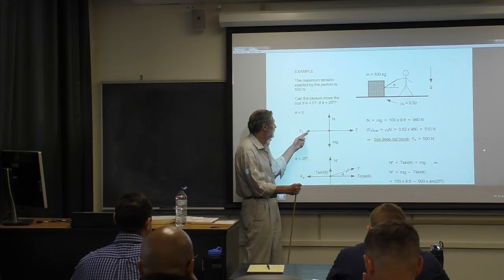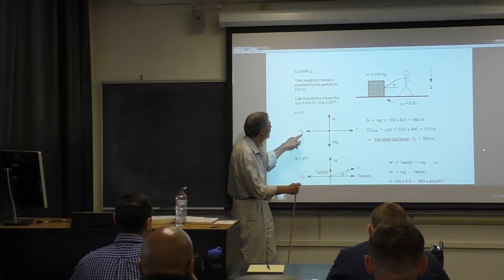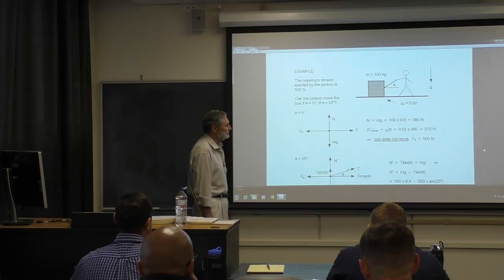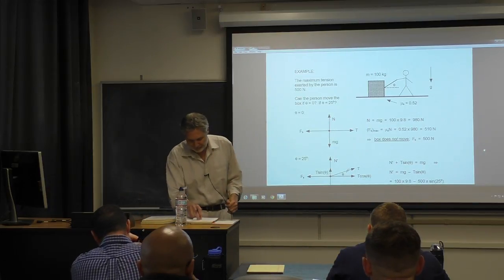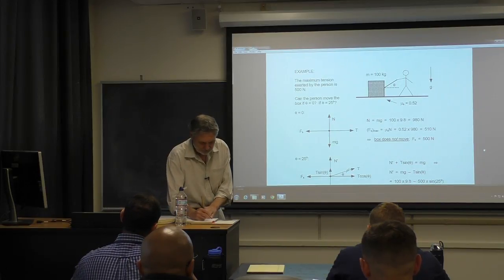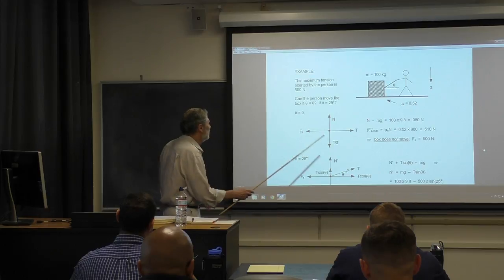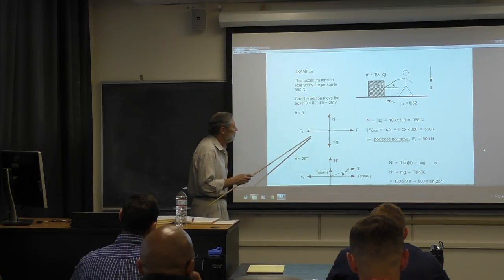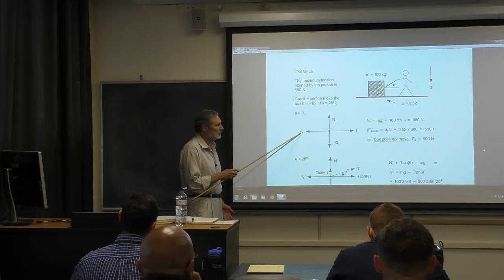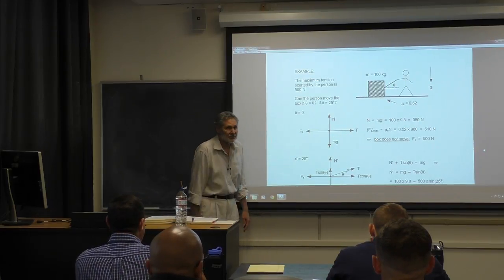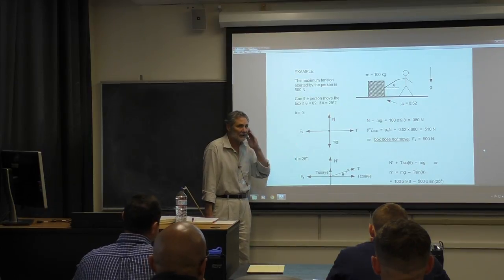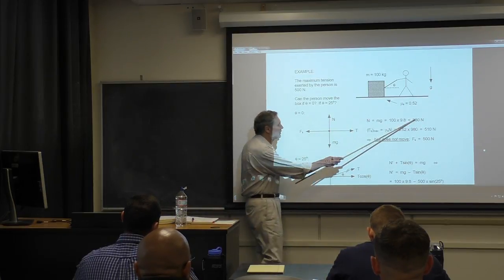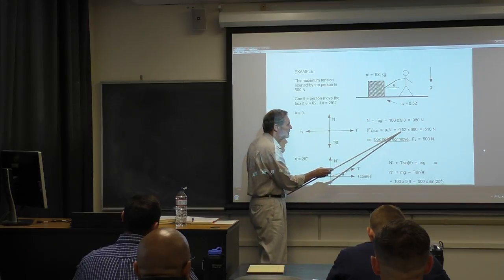If the tension T is bigger than the maximum static frictional force, the box will move; if less, it won't. To find the maximum static frictional force, we find the normal force and multiply by the coefficient of static friction. We get 510 newtons — and since the person can only exert 500 newtons, the box is not going to move.